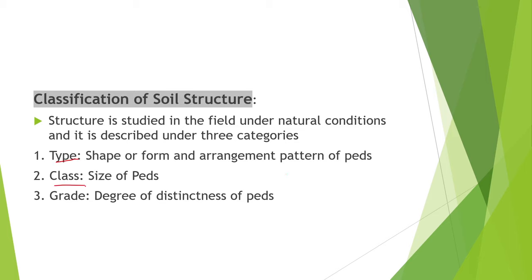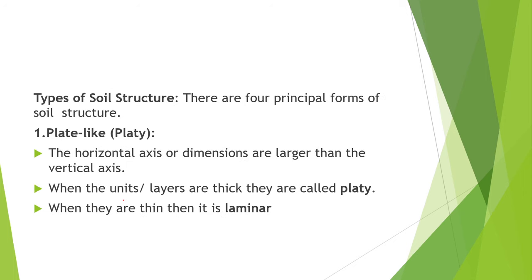The primary particles — sand, silt and clay — are usually grouped together into aggregates, and these natural aggregates are called peds. A clod is a coherent mass of soil broken into any shape by artificial means such as tillage. Soil structure is classified into three categories: type, class and grade. Type defines the shape or form and arrangement pattern of peds. Class defines the size of peds. Grade means the degree of distinctness of peds. There are four principal forms of soil structure: plate-like, prisma-like, block-like and spheroidal.